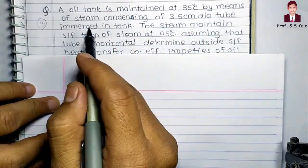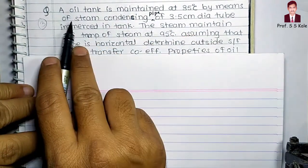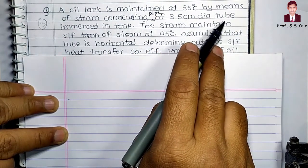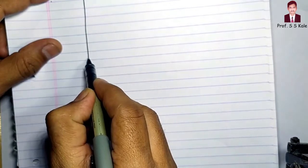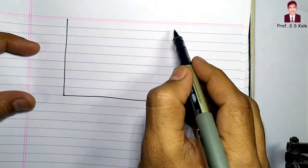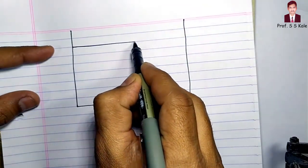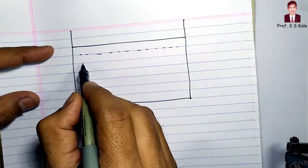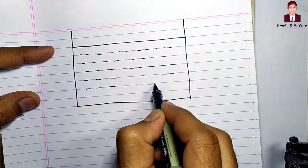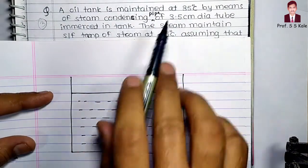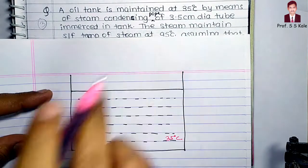An oil tank is maintained at 35 degrees Celsius by means of a steam condensing pipe of 3.5 centimeter diameter tube, immersed in the tank. The tank contains oil, and the oil temperature is 35 degrees Celsius. The pipe diameter is 3.5 centimeter, which equals 0.035 meter.